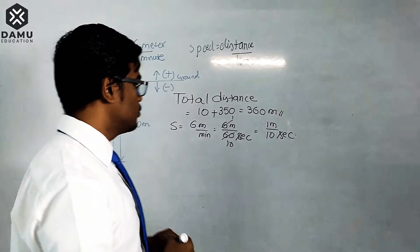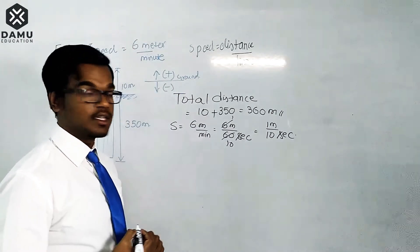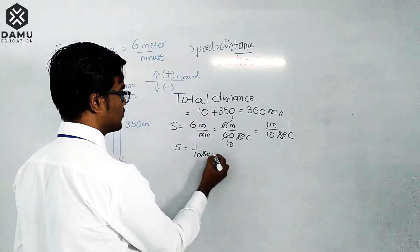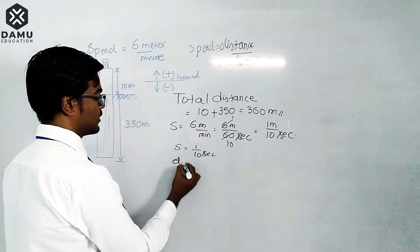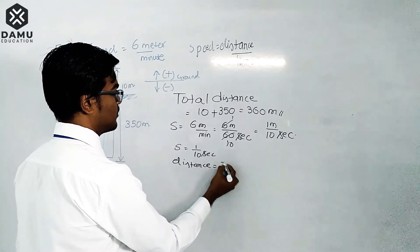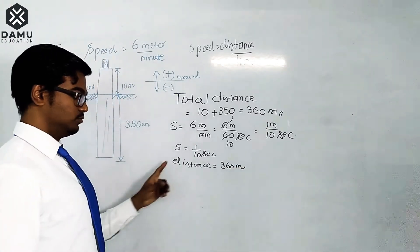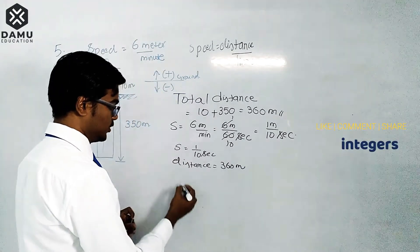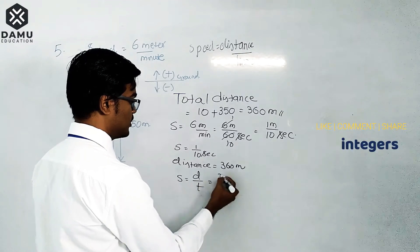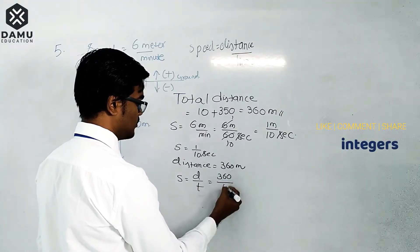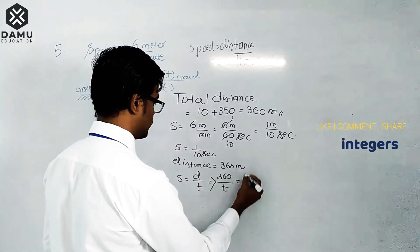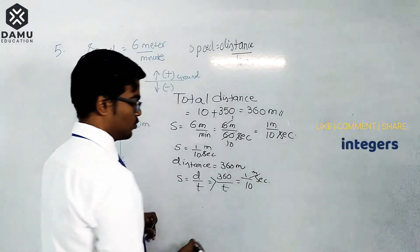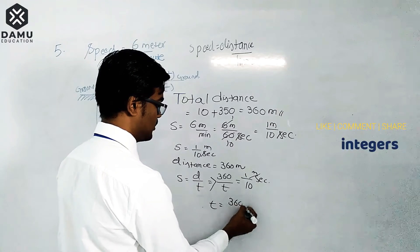Now we calculate the time. Speed is one meter per ten seconds and total distance is 360 meters. Using speed equals distance divided by time, we rearrange: time equals distance divided by speed, so time equals 360 divided by one-tenth, which gives time equals 360 multiplied by 10.